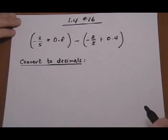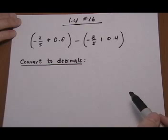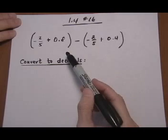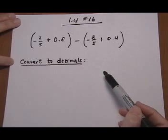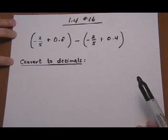1.4, number 16. This problem is an order of operations involving decimals and fractions. And you have a couple of choices here. Either convert to decimals or convert all to fractions.